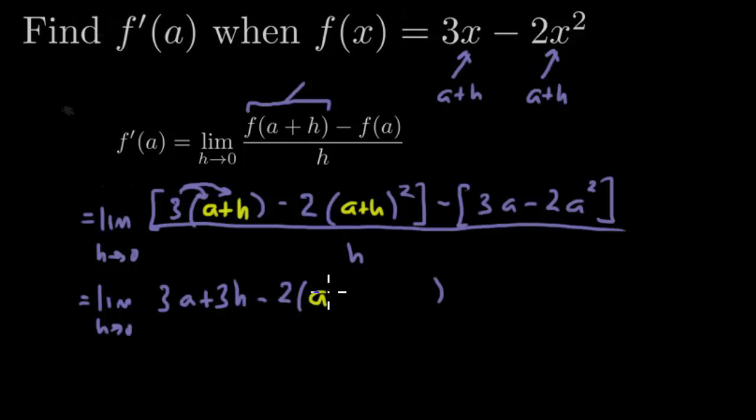So a plus h squared, that's going to be a squared plus 2ah plus h squared. So I'll distribute the 2 in a moment. And then I'm going to distribute the minus sign on the 3a. So that's going to be minus 3a plus 2a squared, again, all over h.